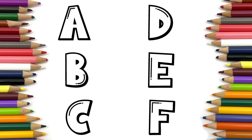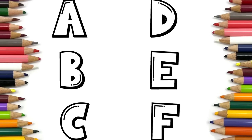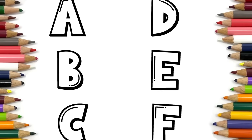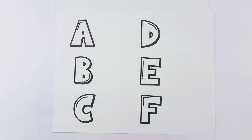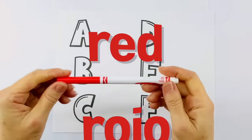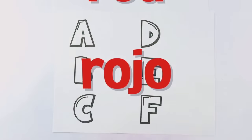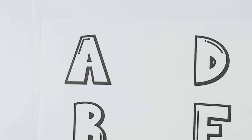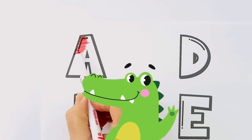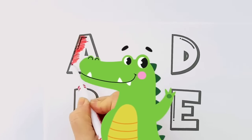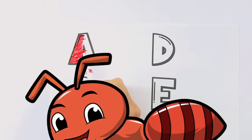Let's practice our ABCs, phonics, colors, and animals. Are you ready? Great! Red in Spanish is rojo. The letter A sounds like 'a', like in alligator or ant.